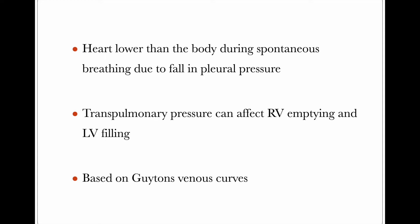The transpulmonary pressure effect can affect right ventricular emptying and LV filling, because blood goes from the right ventricle into the lungs and then into the left heart. So the transpulmonary pressure can affect your RV emptying. If it is high, the afterload for the RV is high, and there will be a fall in right ventricular output, which will also reduce left ventricular output, filling, and cardiac output.